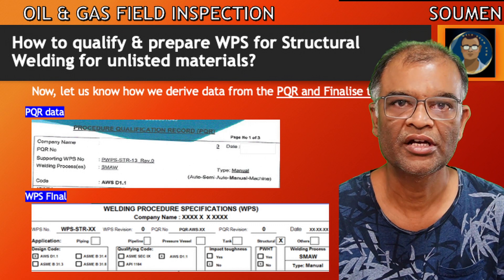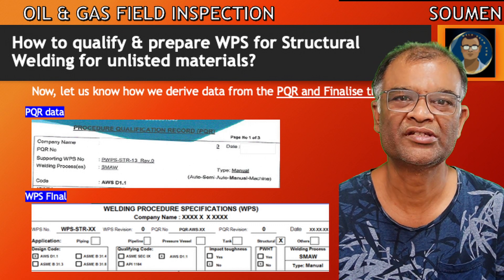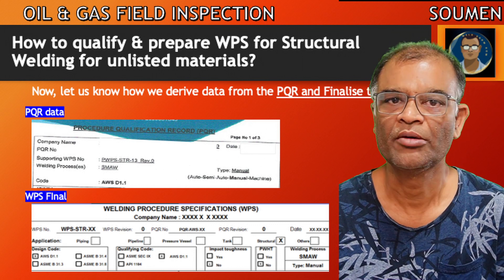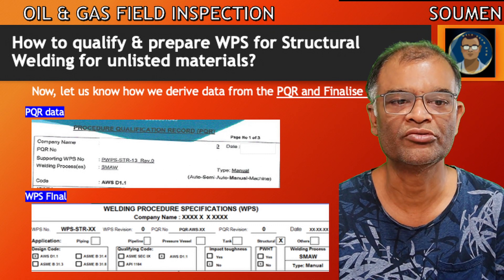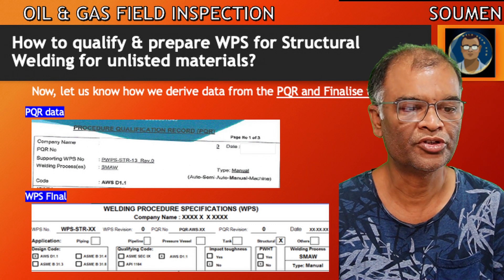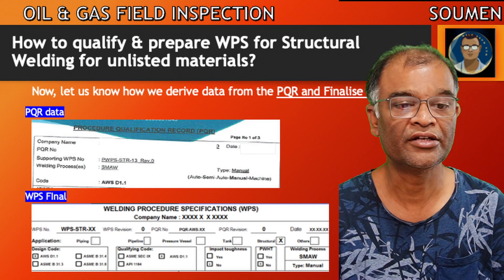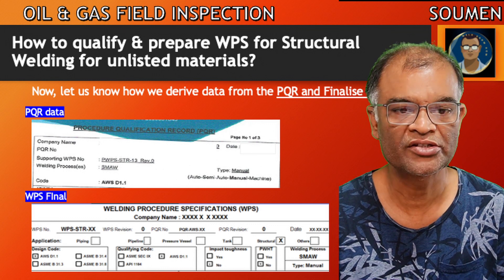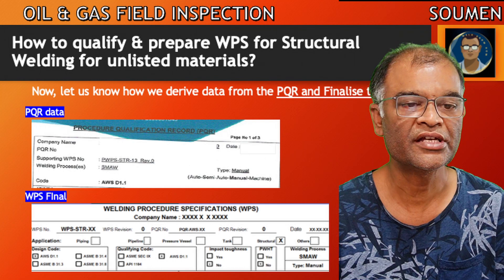Generally, a PQR is not allowed to be revised except for typo errors or very minor changes such as code additions. Any practical test data is not allowed to change in a PQR, so generally a PQR is not revised. The design code is AWS D1.1 and the qualification code is also AWS D1.1. Impact toughness is not required, PWHT is not required, and the welding process is SMAW.